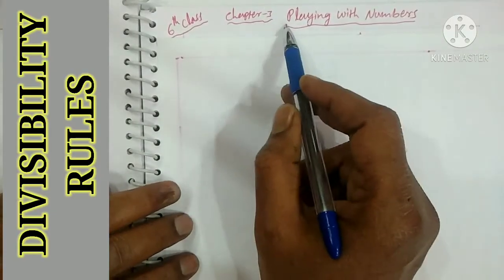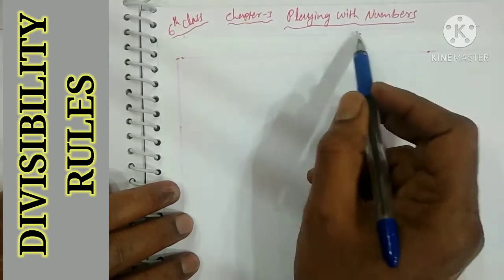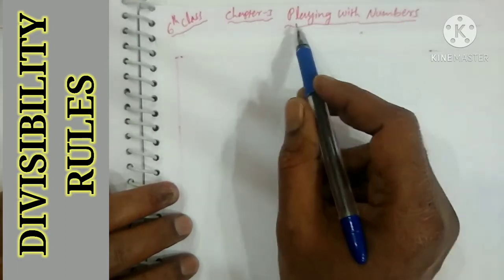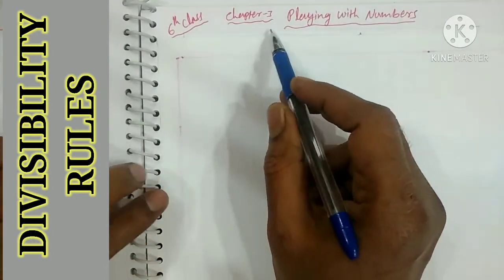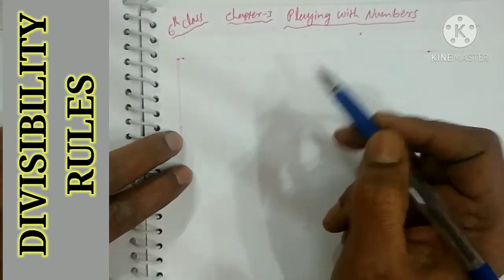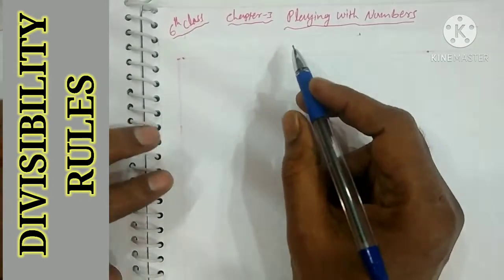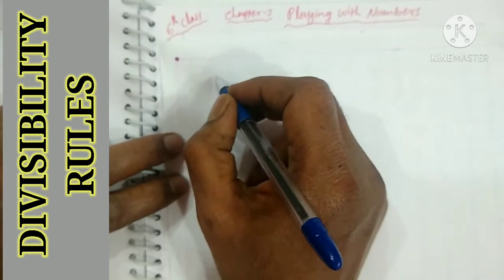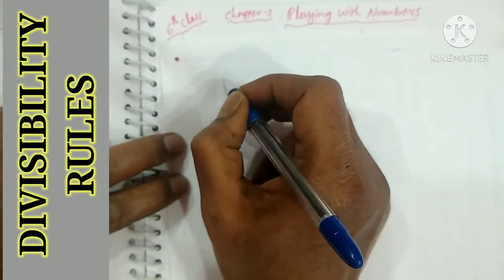6th class chapter 3 - Playing with Numbers. So in this video we are starting a new chapter, Playing with Numbers, which is the third chapter. Playing with numbers means we can really play with numbers. Let me give you one example from our class.